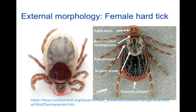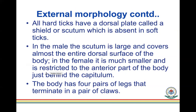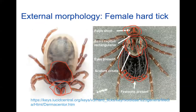The dorsal plate or scutum is another distinguishing feature easily seen in hard ticks. In males the scutum is large and covers almost the entire dorsal surface of the body; in females it is much smaller and restricted to the anterior part just behind the capitulum. The body has four pairs of legs, each terminating in a pair of claws.